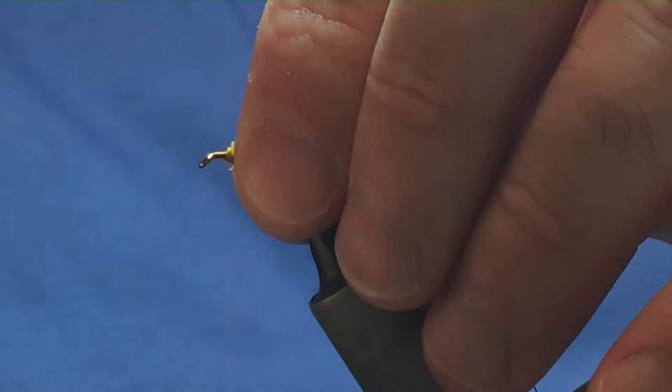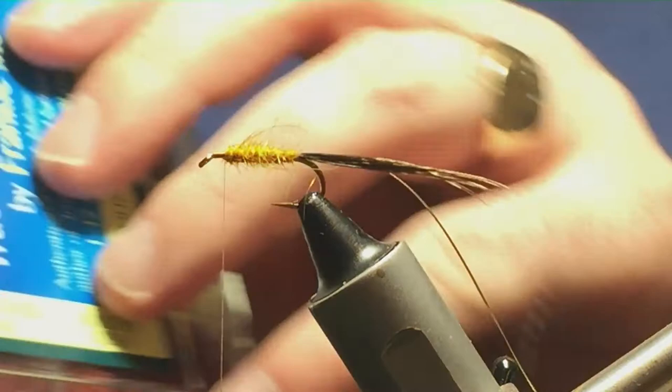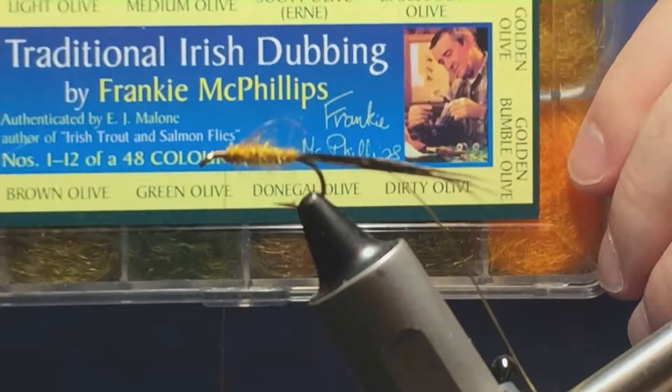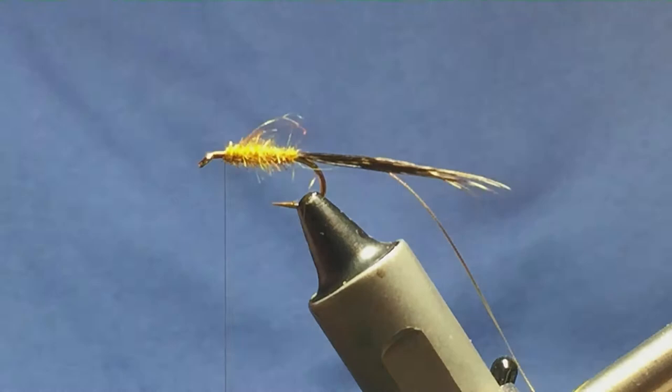Now I'll just show you the packs. That's it there, the golden olive, that's the packs. Hopefully you can see that okay. That's the packs, it's good stuff. It's a guy called Frankie McPhillips from Fermanagh there, down in Enniskillen. It's good to have a range of dubbing in your fly tying arsenal.